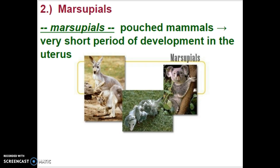Marsupial mammals are the pouched mammals. The birth of the offspring occurs very early in development. So there's a very short period of development in the uterus, and the offspring crawls from there into the pouch while they nurse and develop and grow.